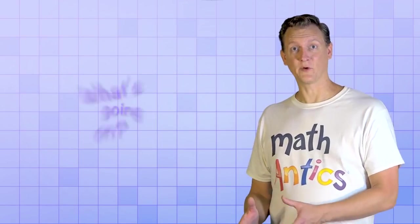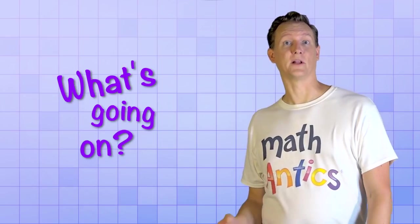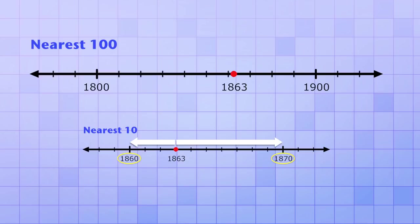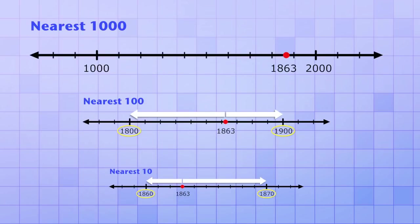A really good way to understand what's going on when you round a number is to look at a number line. Here's 1,863. If we want to round it to the nearest 10, we need to decide if it goes up to 1,870 or down to 1,860. But if we want to round it to the nearest 100, we need to decide if it goes up to 1,900 or down to 1,800. And if we want to round it to the nearest 1,000, we need to decide if it goes up to 2,000 or down to 1,000. And in each case, the decision was based on which round number was closer to the original exact number.